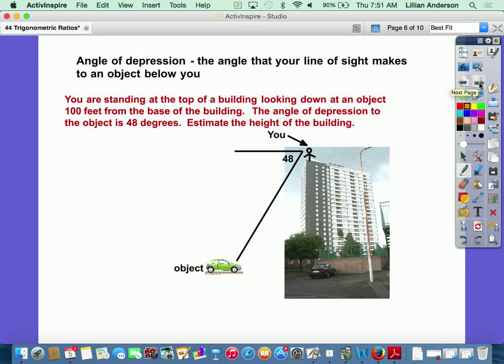Now your angle of depression is the opposite of your angle of elevation, so it's an angle that your line of sight makes to an object below you. So say you got this man standing at the top of the building, he's looking out like oh look at all the birds, but then he notices a car down the street. So when he looks down, he forms his angle of depression, which is 48 degrees.